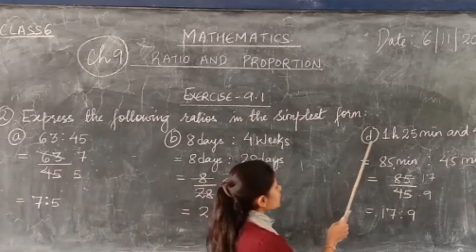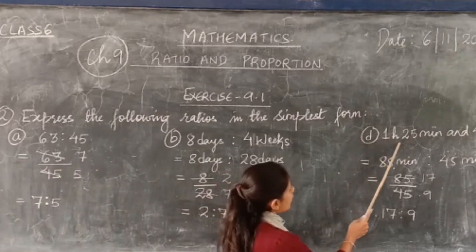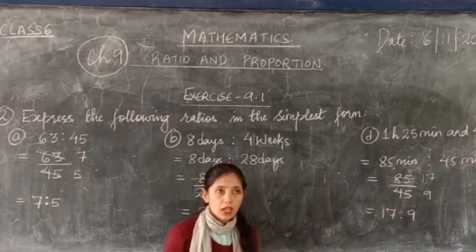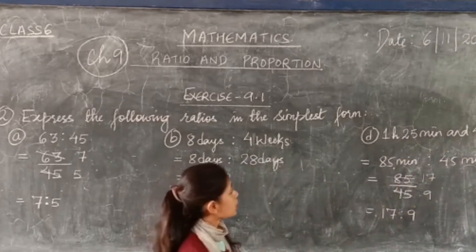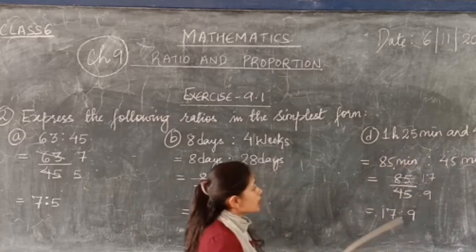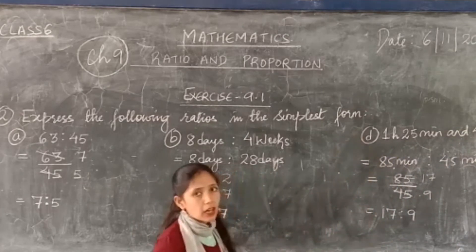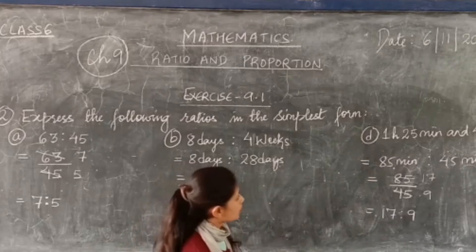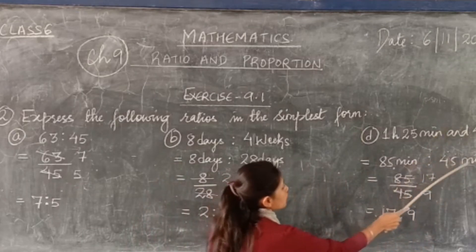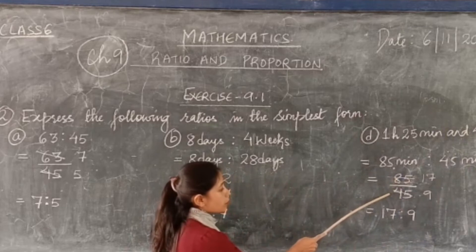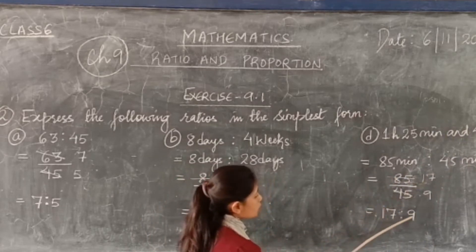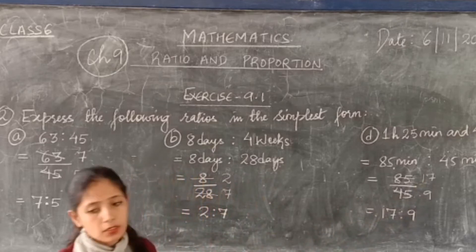Question D is 1 hour 25 minutes and 45 minutes. In 1 hour there are 60 minutes, so 60 plus 25 minutes is 85 minutes. So 1 hour 25 minutes is 85 minutes is to 45 minutes. Write 85 over 45 and cancel with 5 — the answer is 17 is to 9.